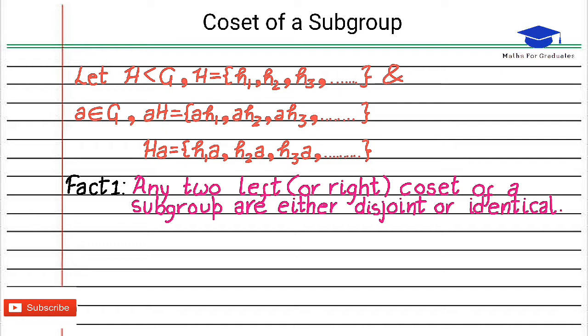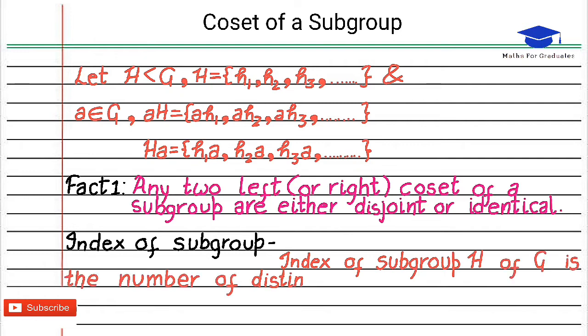Before we start proving Lagrange's theorem, let us first know index of a subgroup. Index of a subgroup H of G is the number of distinct left or right cosets and it is given by order of G over order of H.